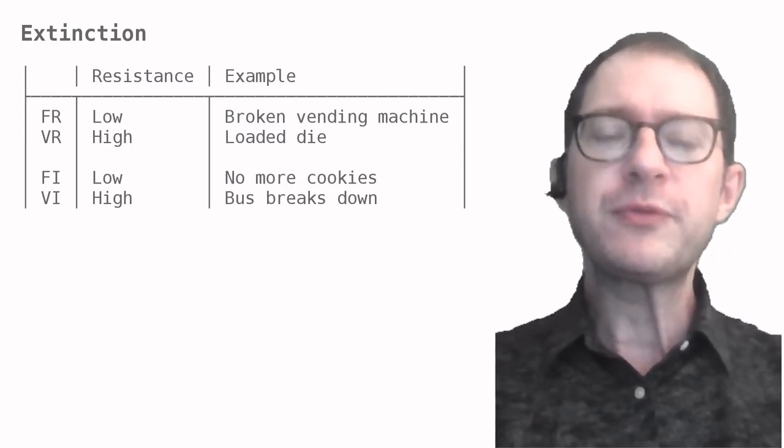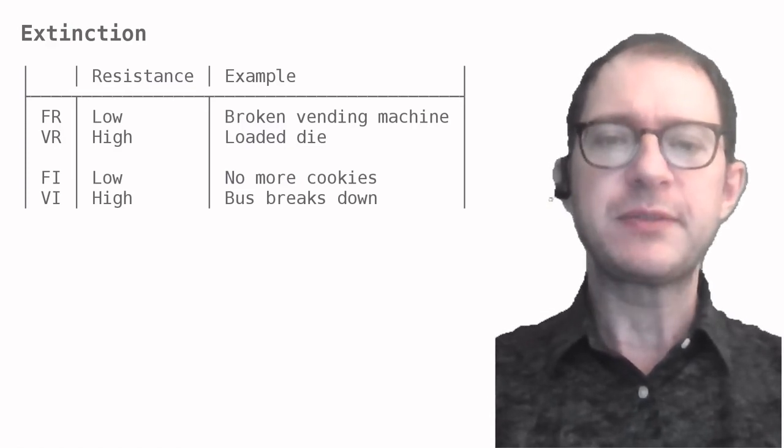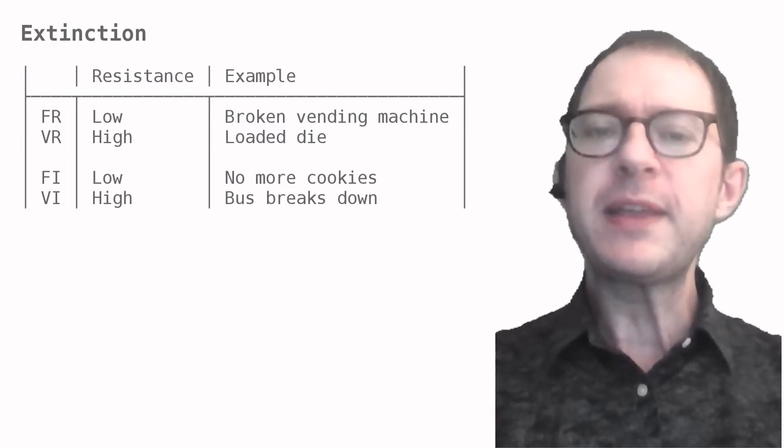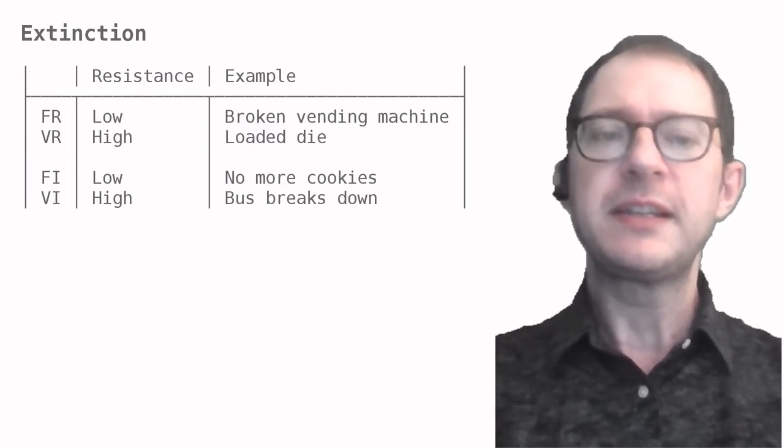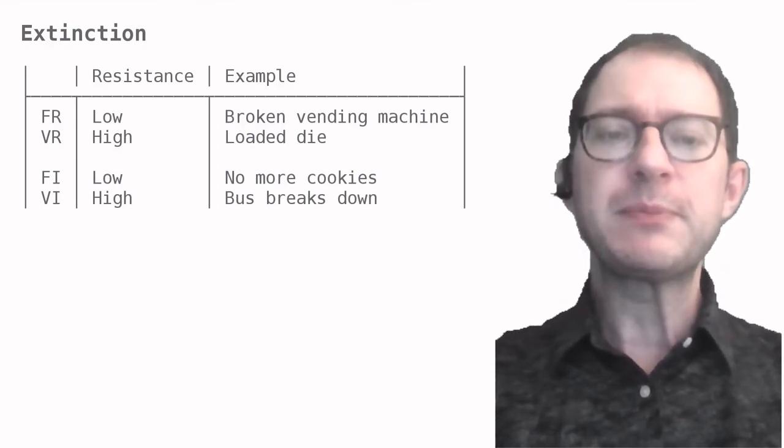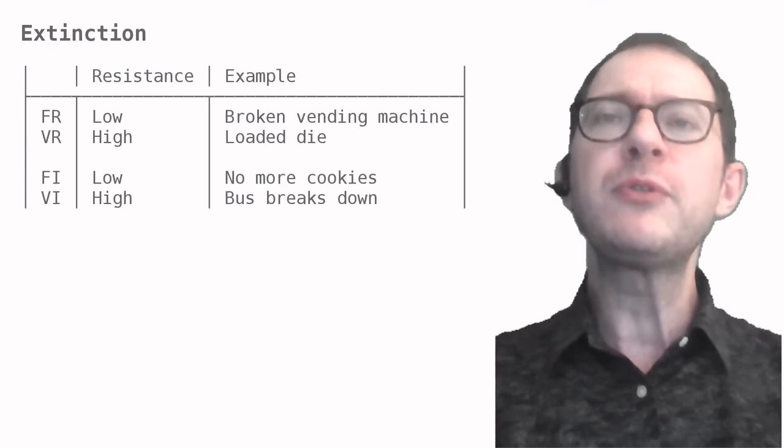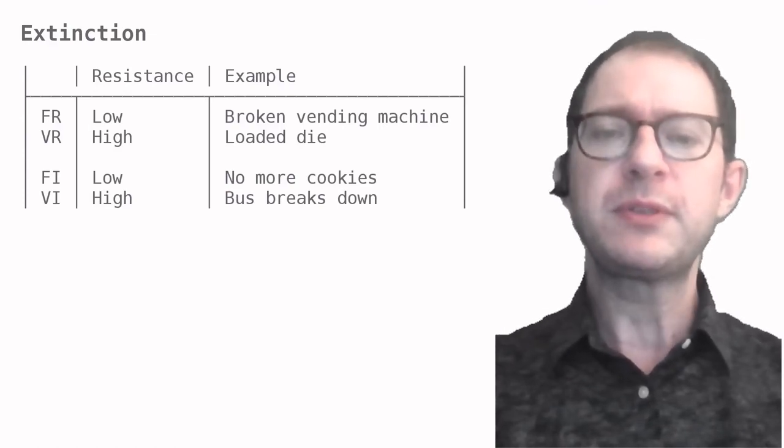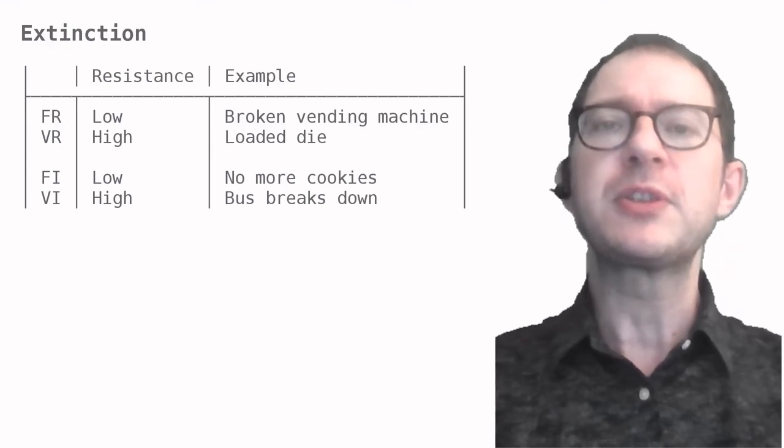The situation for interval schedules is similar. FI schedules have low resistance to extinction, while VI schedules have high resistance. If the cat doesn't get its food regularly, they stop checking for it after just a few times. But if the bus breaks down, you will continue to look for it for a long time. Like in the VR schedule, you're used to waiting even under normal circumstances.